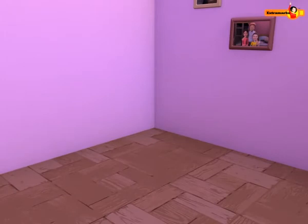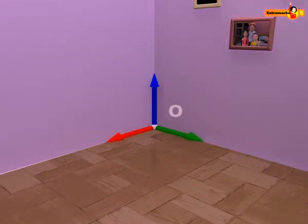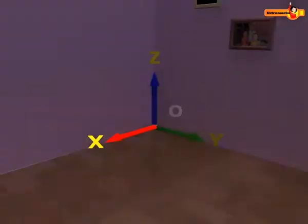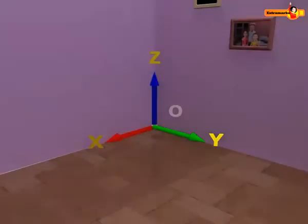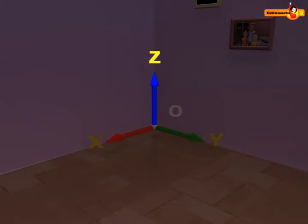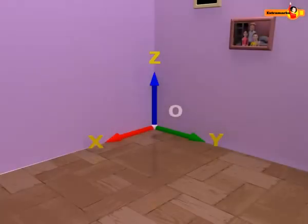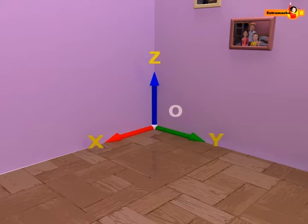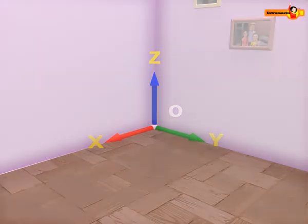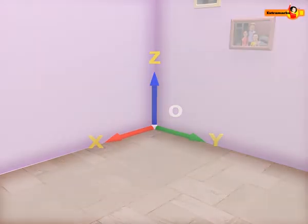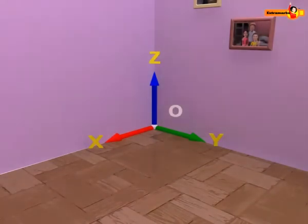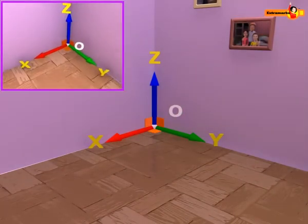Let's observe the corner of this room carefully. We can consider the X, Y, and Z axes in this corner of the room as shown here. We observe two walls and a floor, that is, three planes intersecting at a point O in such a manner that they are perpendicular to each other.